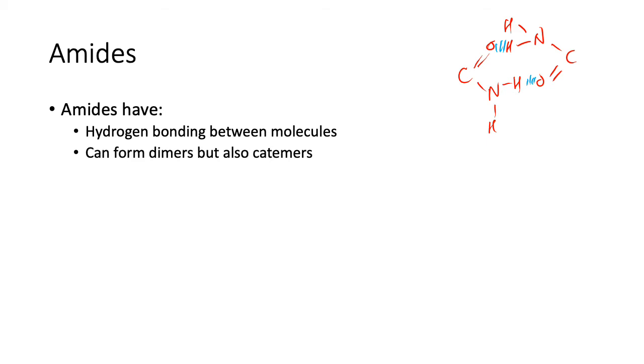However, this would be showing it forming a dimer, but it can actually form catamers, which are technically ongoing structures where each amide bonds to more than one other amide. So this particular amide is bonding to two other amides.